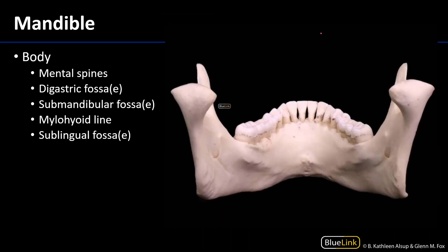Now moving into the skull, specifically the mandible — this is a posterior view of the mandible. We can see here's the body of the mandible and there are the rami of the mandible. Here are the mandibular teeth and the angles of the mandible.